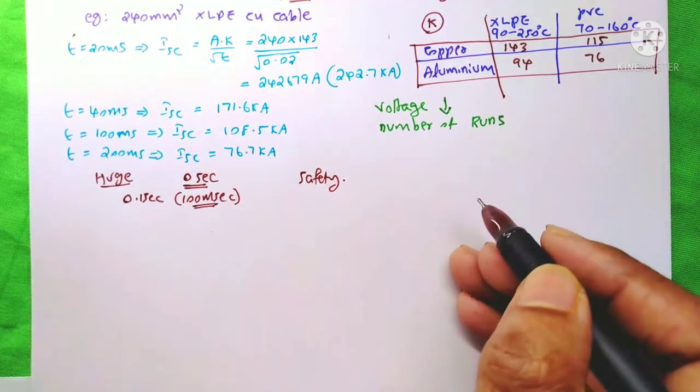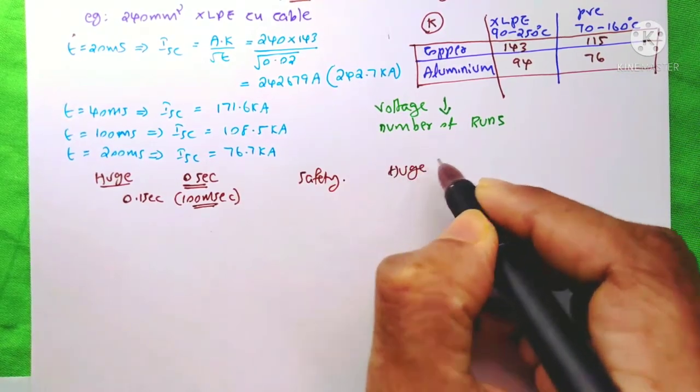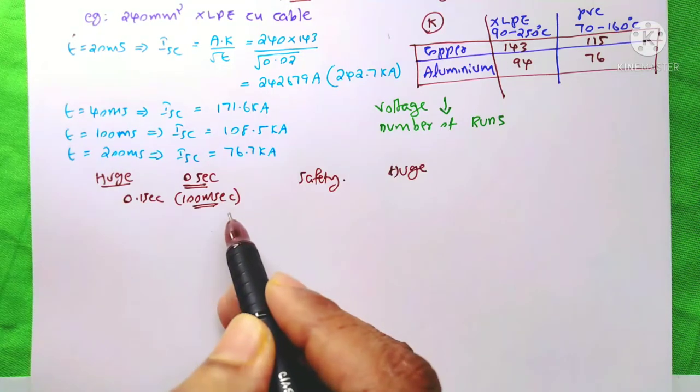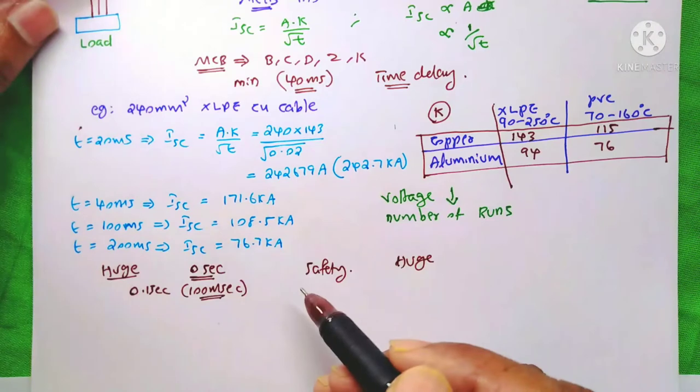if a circuit breaker cannot trip instantaneously, then at that time also our cable can handle the huge short circuit. So if we consider some delay, then our short circuit capacity of the cable decreases.